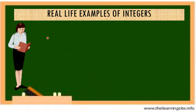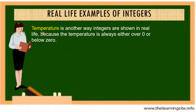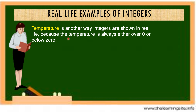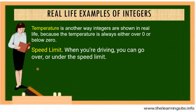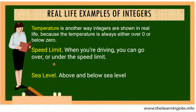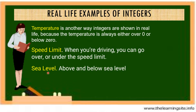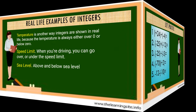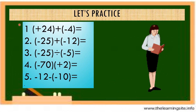Real-life examples of integers: temperature is shown in real life because it is always either above zero or below zero. Speed limits — when driving you can go over or under the speed limit. And sea level — above and below sea level. Let's practice.